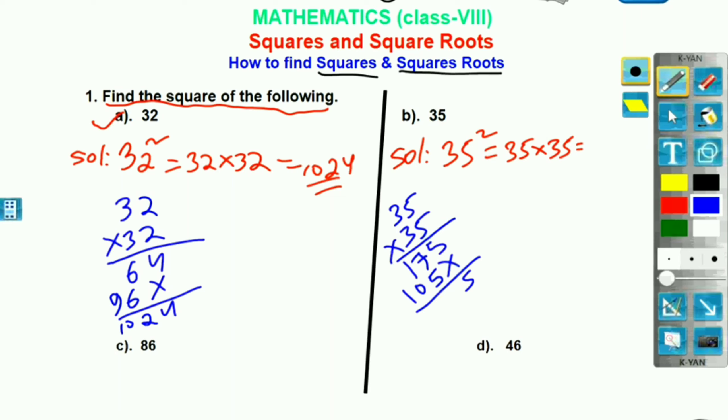So, 5. 7 plus 5, 12. Write 2. Carry 1. 2, 1. And this one is 2 and 1. Our answer is 1, 2, 2, 5. This is our answer.